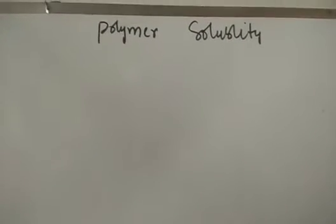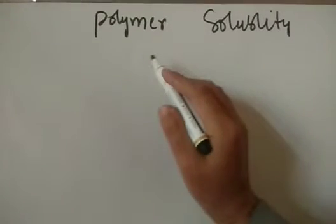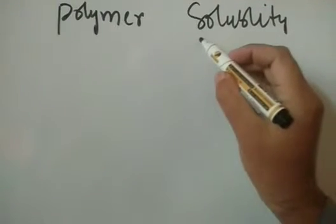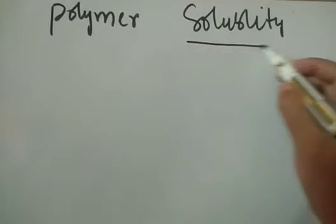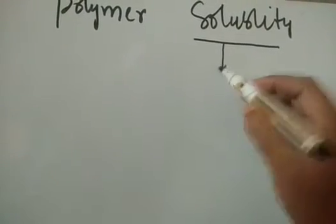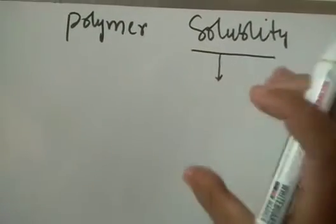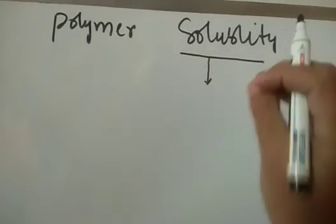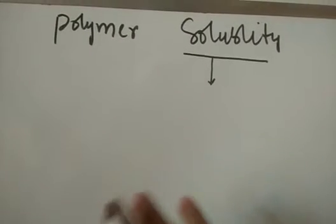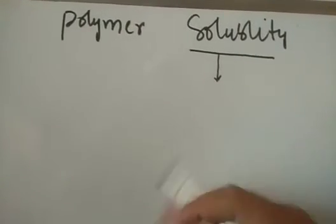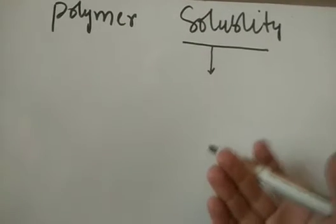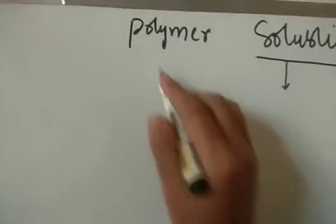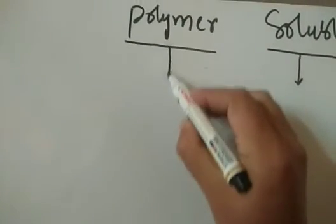Today we'll be talking about an important topic in polymer chemistry, that is polymer solubility. Solubility, as we know from our previous classes, simply means how much amount of a given substance you can dissolve in a given liquid or solvent. If it easily dissolves, we say the solubility is very high. If it dissolves to a lesser extent or doesn't dissolve easily, we say the solubility is less or it is insoluble.